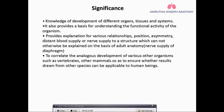As it descends, it still maintains the nerve supply from where it was originally placed — the cervical region. This is the importance of embryology: you cannot understand why the diaphragm is supplied by the phrenic nerve of root value C3, C4, C5 by only looking at adult anatomy.